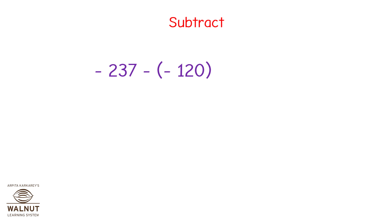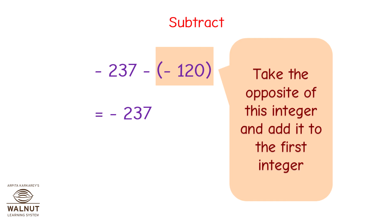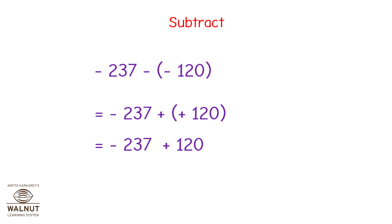Let us do this subtraction problem. We have negative 237 minus negative 120. We write the first integer as it is, then we take the opposite of the second integer and add it to the first. Now we solve: this becomes minus 237 plus 120, which is minus 117.